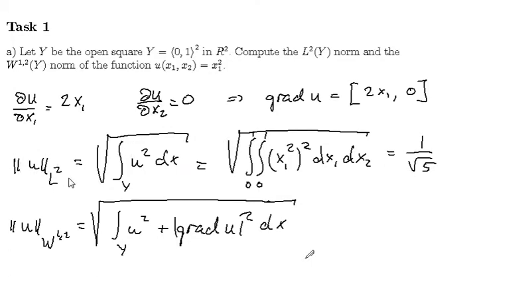In order to compute the L² norm of u, we only need this expression x₁². We recall that L² norm is given by the square root—I meant the square root, not the square—of the integral of the square of u. So in the square Y it's easy to integrate on.